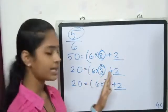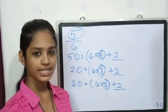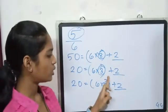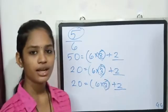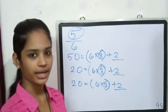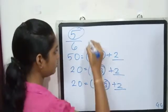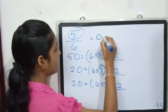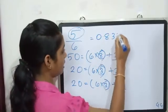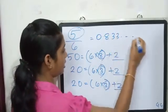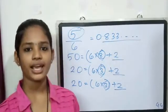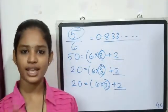We can write this as a table of 6. This is the number 6. The result equals 0.8334, so 5 by 6 equals 0.833 repeating.